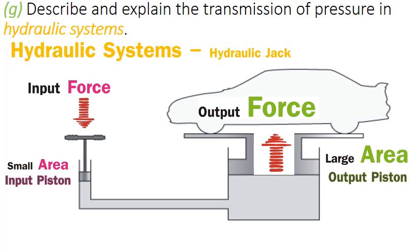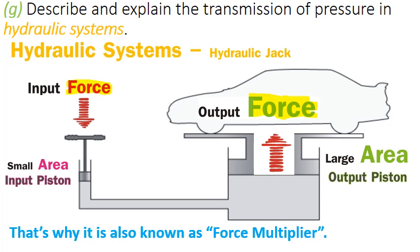Notice the font size difference in the diagram—the input force has a smaller font size compared to the output force. This is because the input force is a small amount of force we apply, and in result we get a large amount of force at the output piston. This is why the hydraulic jack is also known as a force multiplier. Now let's understand mathematically how this works.